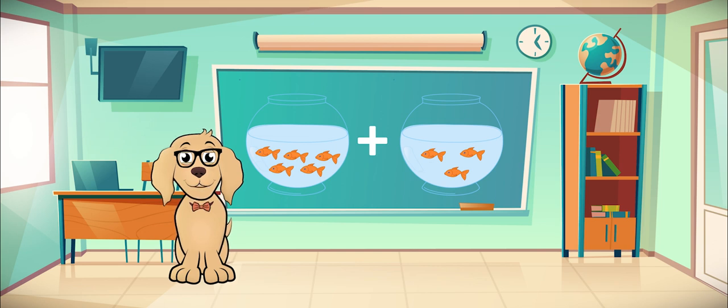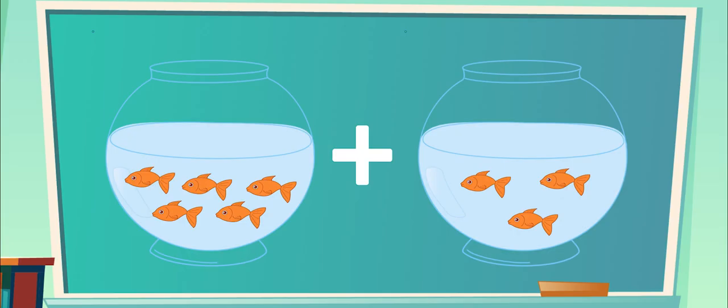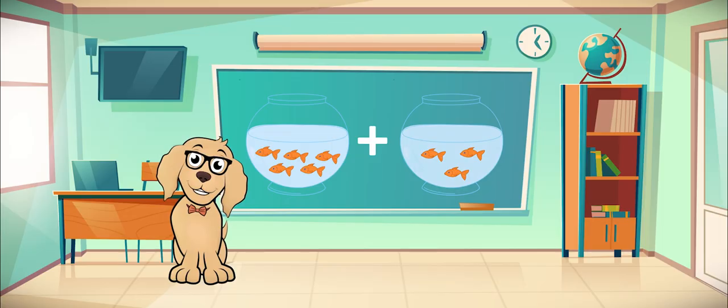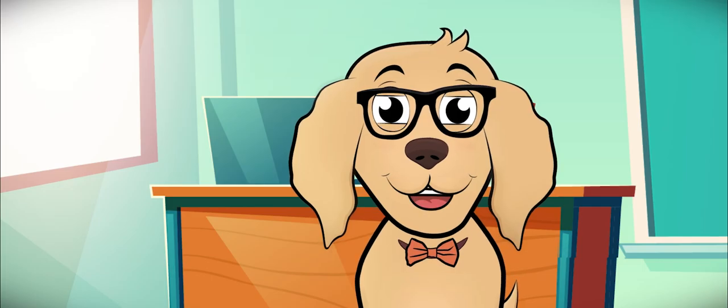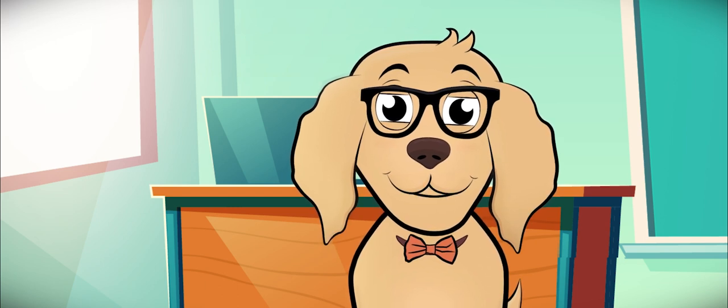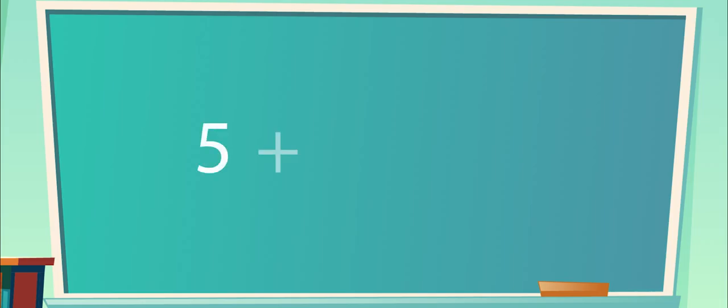Starting with addition, let's say you have five fish in one tank and three fish in another. How many fish do you have total? Let's start with the five and add the three others. Six, seven, eight. Eight fish. Let's put them all in one tank. If we were to put this into an equation, it would look like five plus three equals eight.